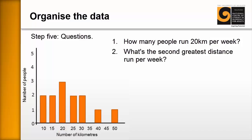Number two: what's the second greatest distance run per week? Somebody runs 40 kilometres there, that's the second greatest distance. Number three: what's the most commonly run distance per week? The graph lends itself to this. We can see the largest bar there as the 20 kilometre bar, so three people run that.